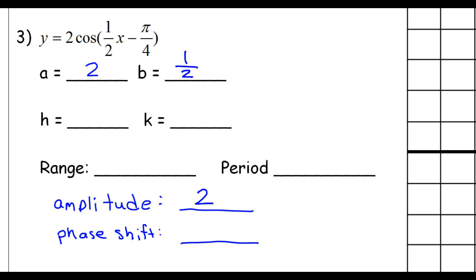So, the period, let's do that first. The period is going to be 2π divided by B. So because B is 1 half, then the period is going to be 2π divided by 1 half. Dividing by half is the same thing as multiplying by the reciprocal. So, this would be the same thing as 2π times 2, which is why the period is 4π.